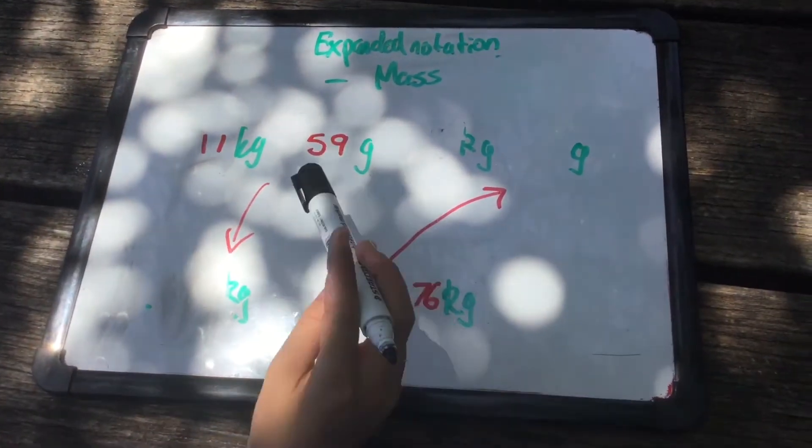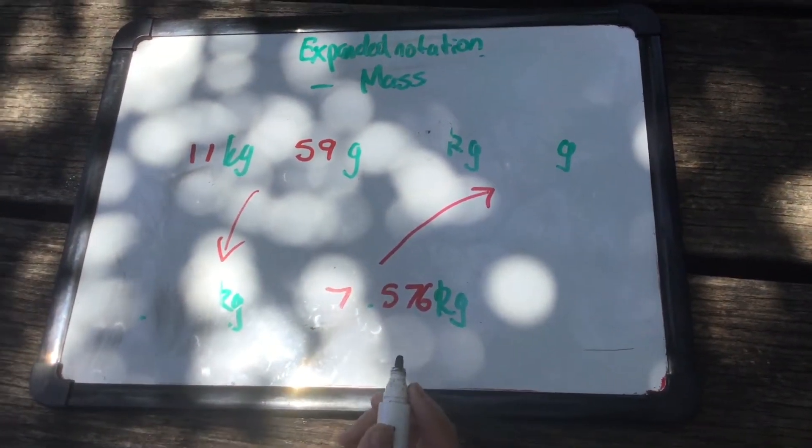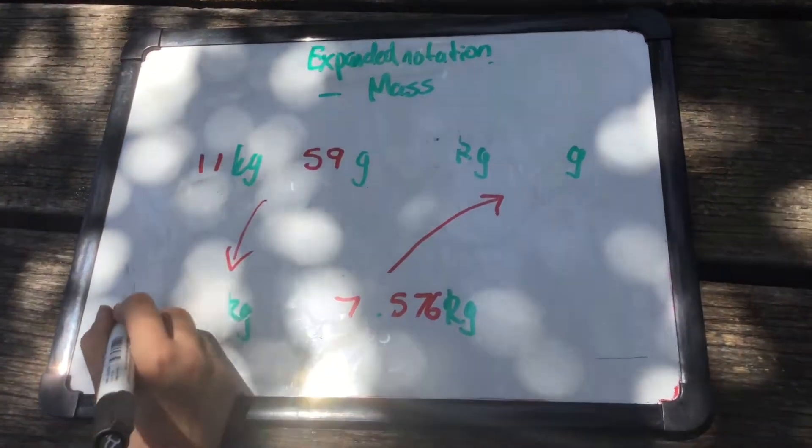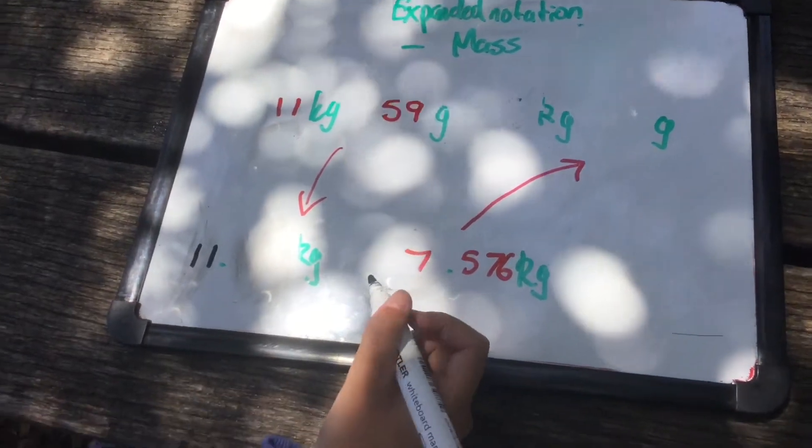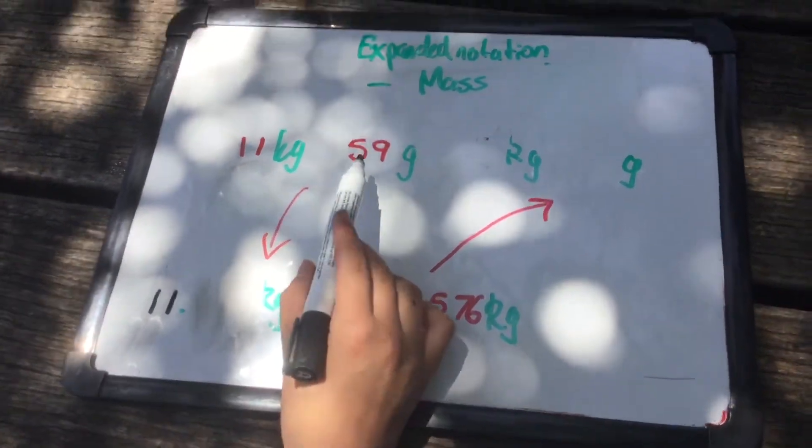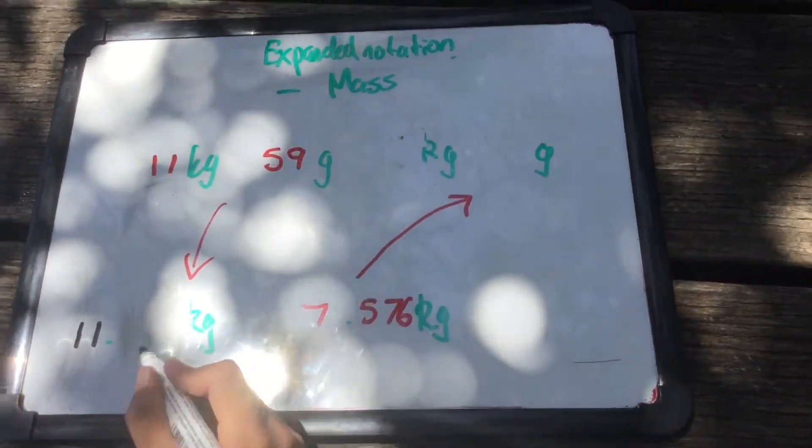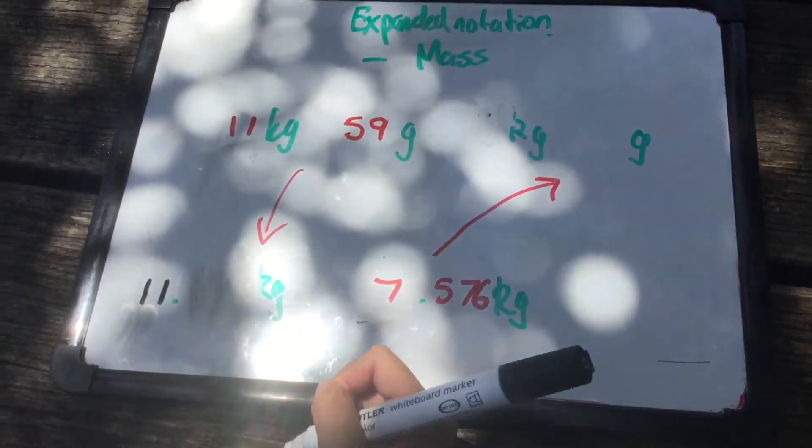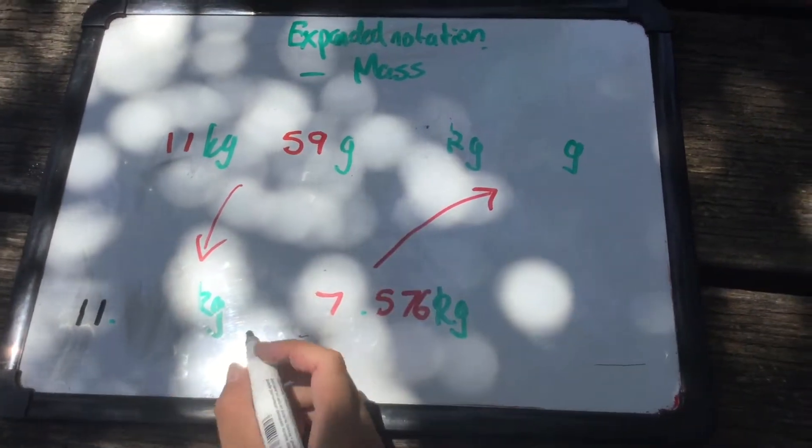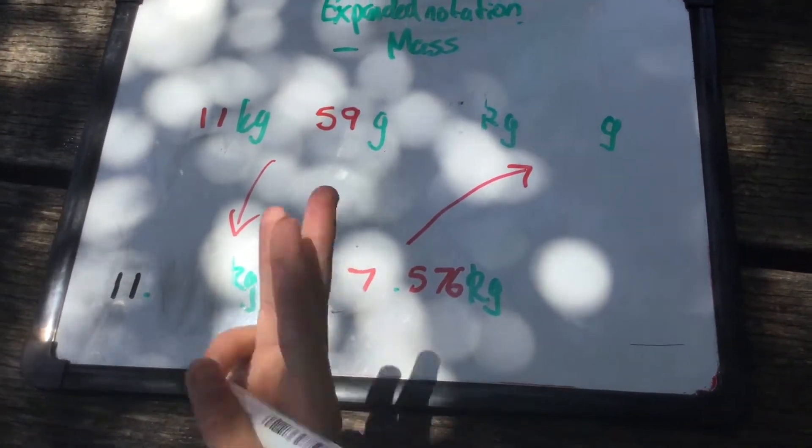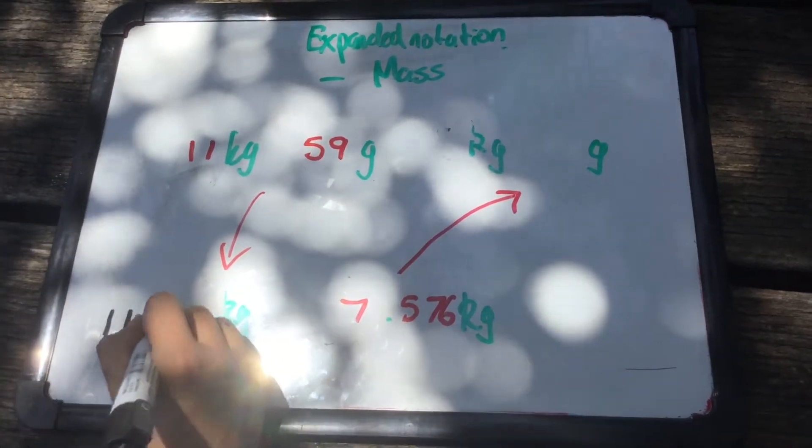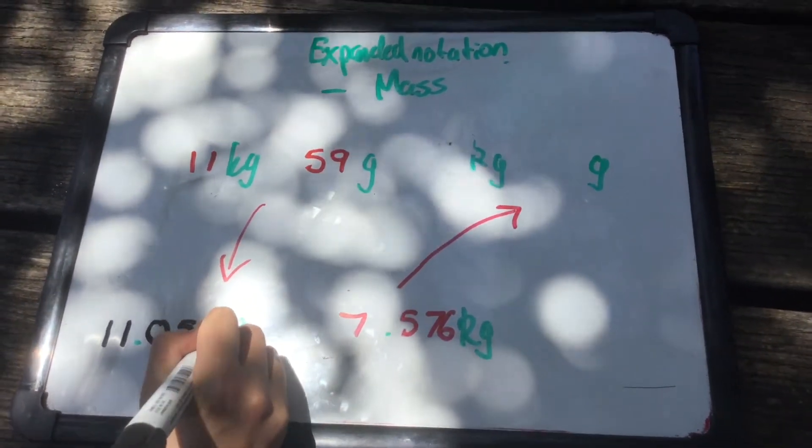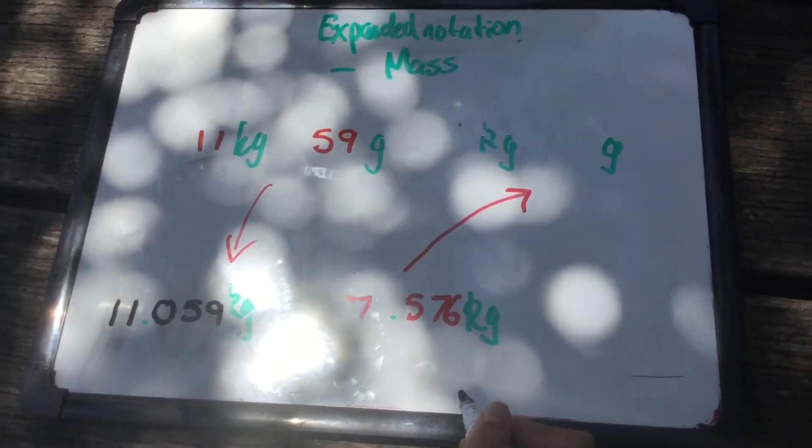We are going to convert 11 kilograms and 59 grams into kilograms. So first what we do is the easiest part. 11 kilograms should always be the whole number of the decimal. Now we have to put 59 grams in here. So 1000 grams is equal to 1 kilogram, and 1000 has 3 zeros. But we only have 2 numbers over here. So what we have to do is make it 3 digits. We have to put a zero before we add 59. So it is 11.059 kilograms.